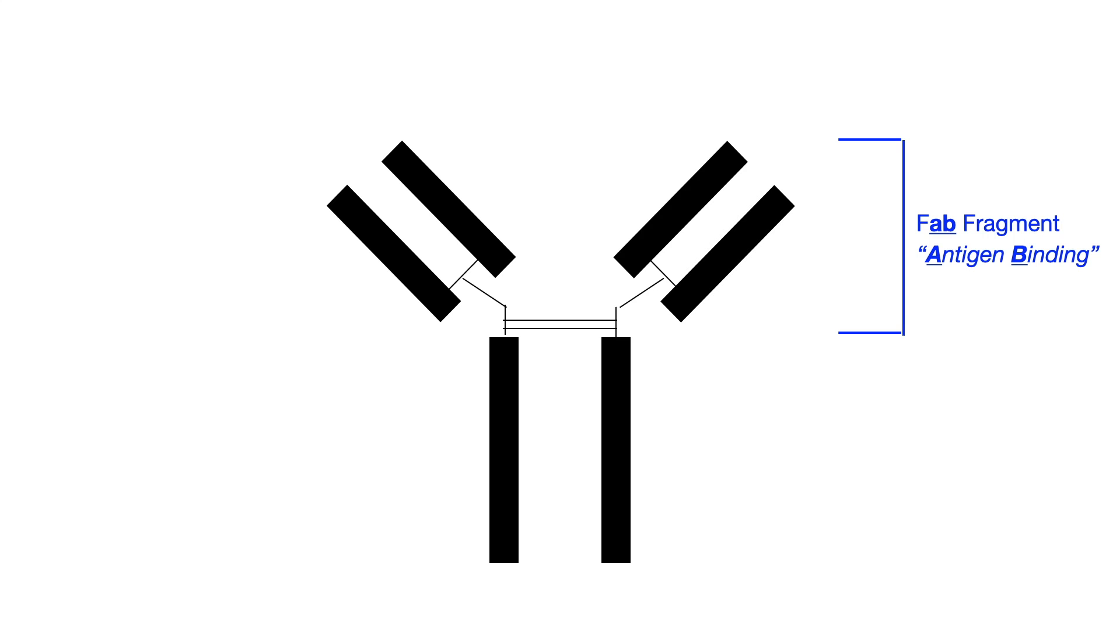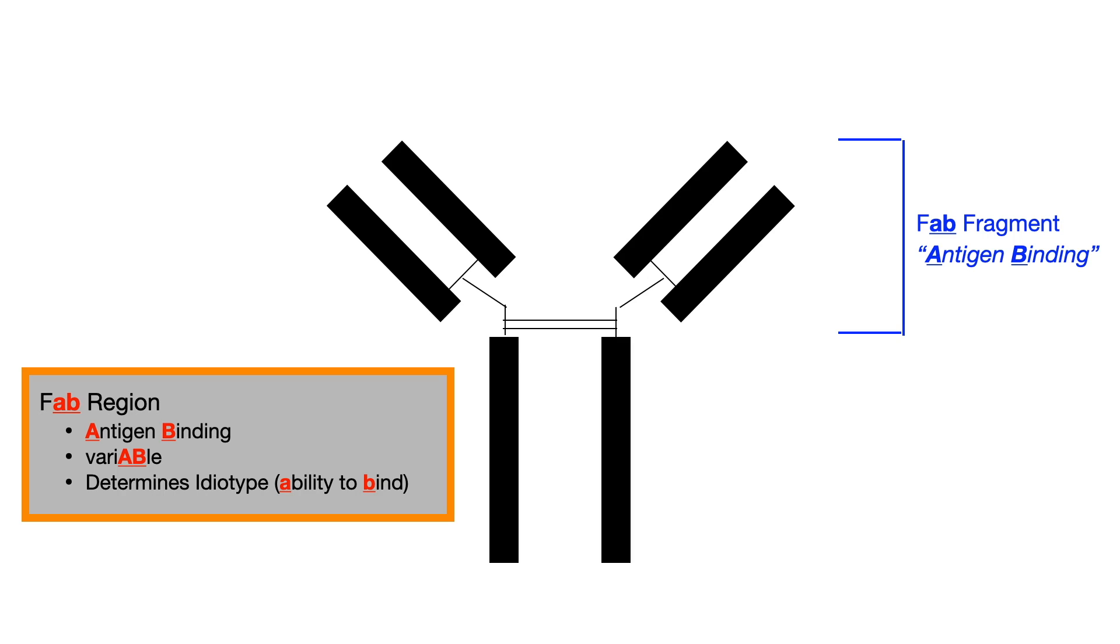Now, let's contrast that with the FAB fragment, our top region. Now, I already told you that AB stands for antigen binding. But some other things you want to know with AB is that this is very UB-ble. I know that sounded weird as I said it. It's variable.